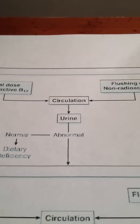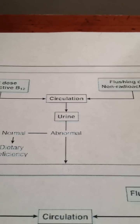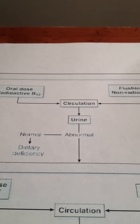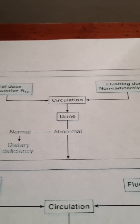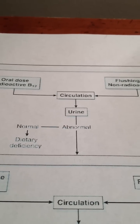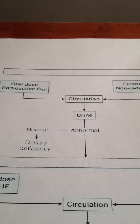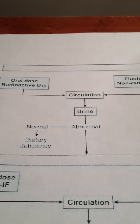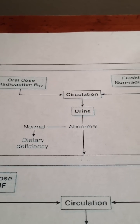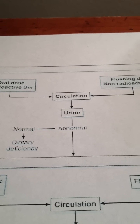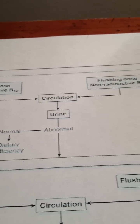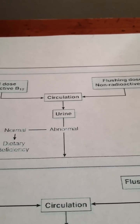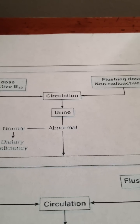Let's talk a little bit about the Schillings test. This is the figure from your book. The Schillings test is to evaluate why vitamin B12 is not being absorbed and we want to see what's going on in the GI tract. So we give the person an oral dose of the radioactive B12 and a flushing dose of non-radioactive B12 to get all the binding sites in the liver.